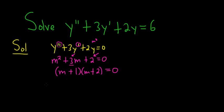At this point, you have a product that is equal to zero, so you set each factor equal to zero. And then you solve for m, so we get two different answers, m equals negative one and m equals negative two.